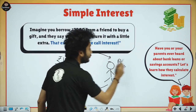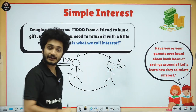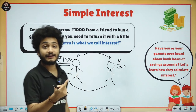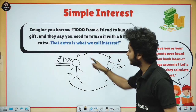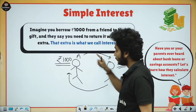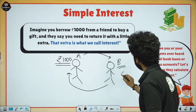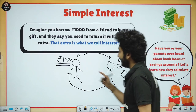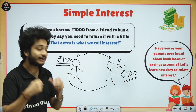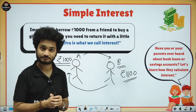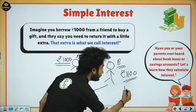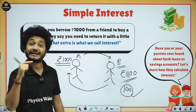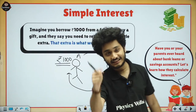But in return, B wants some profit because he helped A, right? So B says: 'When you return my 1000 rupees, I want 1100.' But A is like, 'I only borrowed 1000 rupees — I need to give 100 rupees extra.' So this extra amount is interest — this is interest.